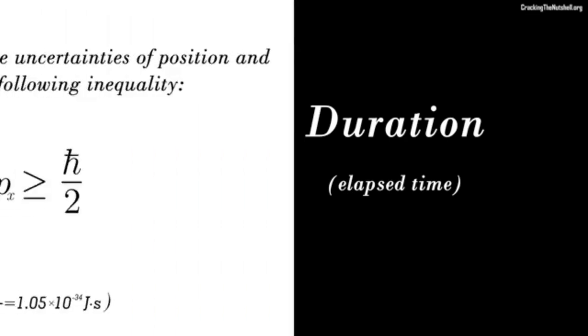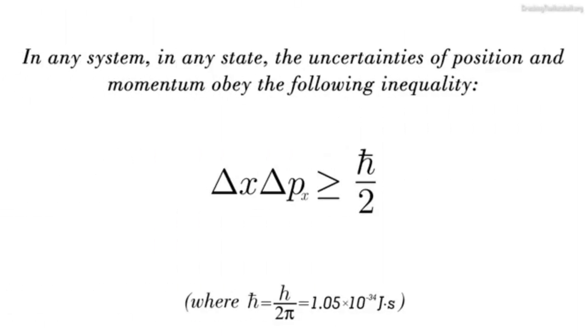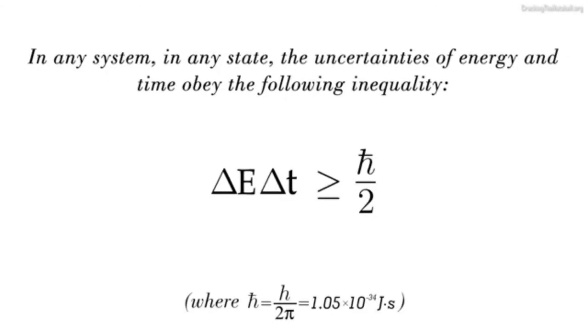This is a consequence of another deep principle called the complementary principle. In general, the amount of observables or variables that we can define simultaneously in a problem is always limited.